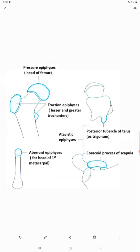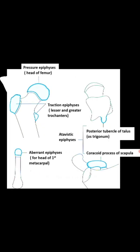Coming to the aberrant epiphyses, examples are the head of the first metacarpal and base of other metacarpals — the head of the first metacarpal is shown in blue color. And lastly, the atavistic type of epiphyses: the coracoid process of scapula is very important, and another example is the posterior tubercle of talus, also called os trigonum. This is all about the epiphyses of the long bone.